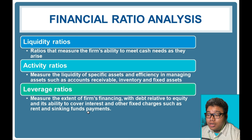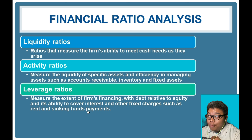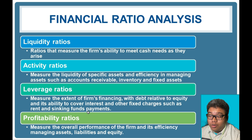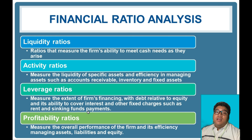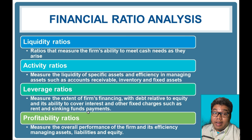Leverage ratios measure the extent of the firm's financing. These are useful to creditors to understand how much competition they face relative to the assets the company maintains. Profitability ratios measure the overall performance of the firm and its efficiency in managing assets, liabilities, and equity. This concludes our discussion of financial statement analysis. We will have extensive practice solving ratios as well as horizontal, vertical, and trend percentages in our next video.